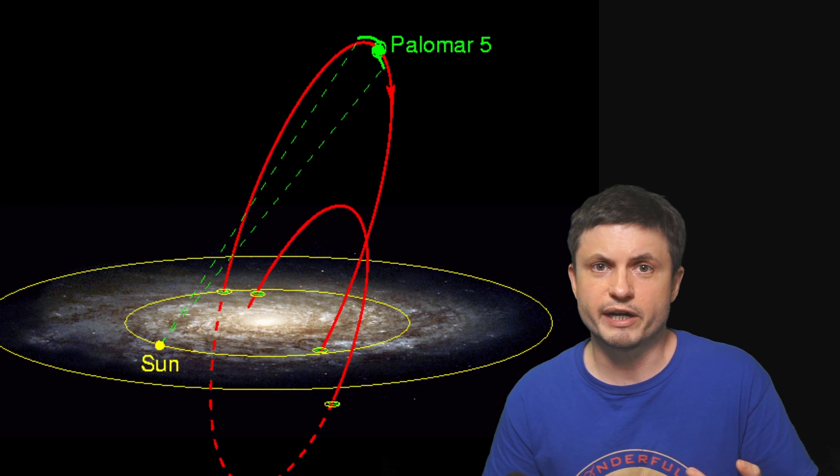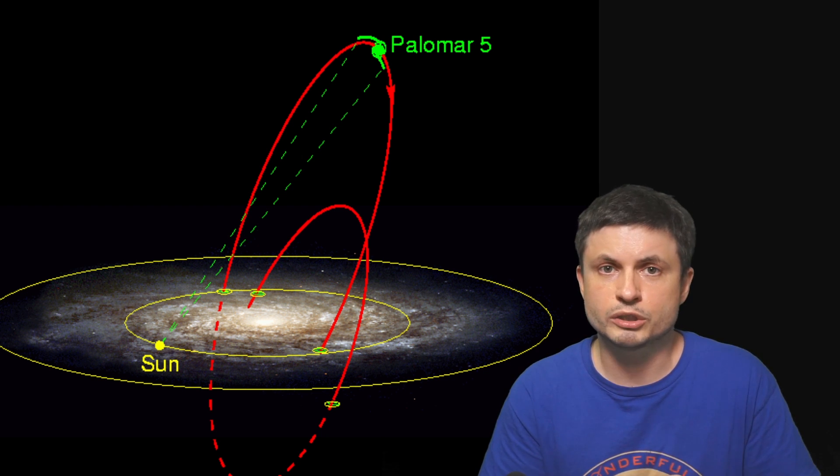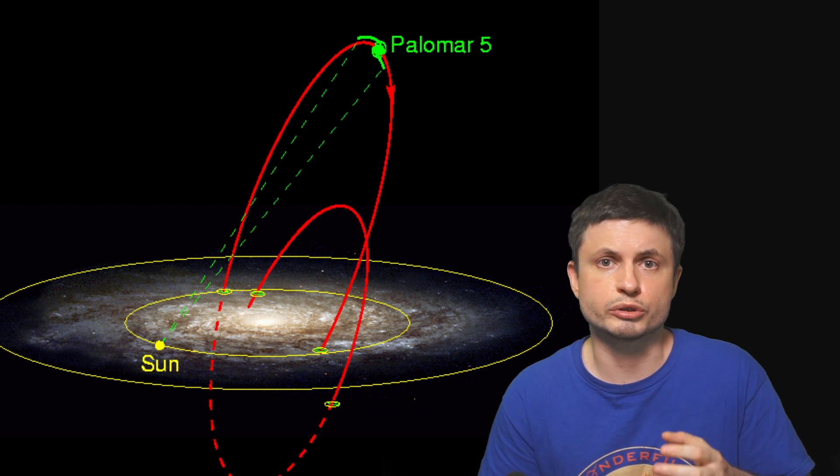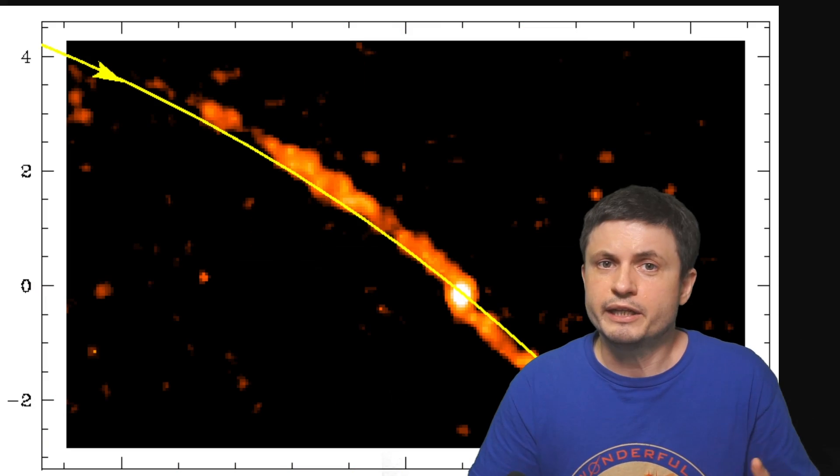And so because of this, Palomar 5 might explain a lot of things about stellar stream formation, while also helping us understand what happens to globular clusters when they're tidally disrupted by various galaxies.